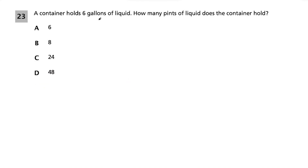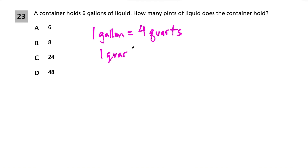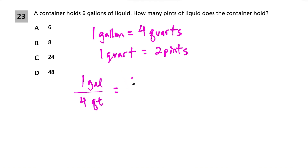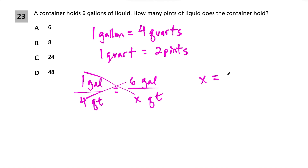Question 23: a container holds 6 gallons of liquid. How many pints does it hold? We need to know: 1 gallon equals 4 quarts, and 1 quart equals 2 pints. Setting up a proportion: 1 gallon over 4 quarts equals 6 gallons over x quarts. Cross multiplying gives x equals 24 quarts. Now we convert quarts to pints: 1 quart over 2 pints equals 24 quarts over y pints.